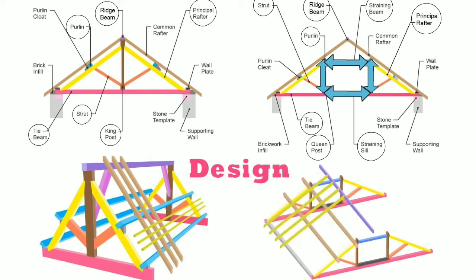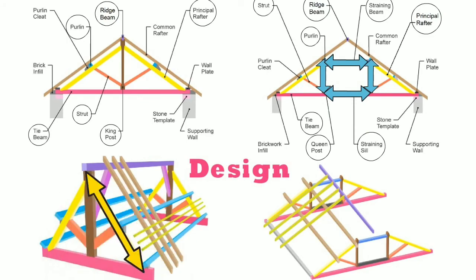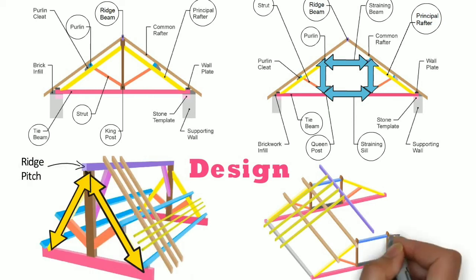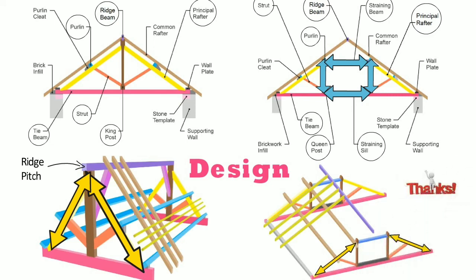Design. In case of king post truss, the top ends of two main rafters are connected to the ridge pitch. Whereas, in case of queen post truss, the top ends of two main rafters are joined with the queen post's heads. So friends, see you in the next video. Thanks for watching.